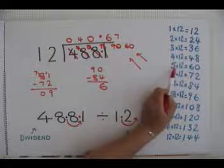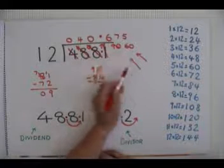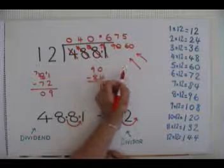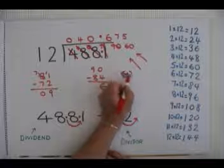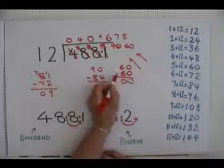12 goes into 60 exactly 5 times. So we can write 5 up here. And as 12 times 5 is 60, when we take our 60 away from our 60 we have nothing left over.